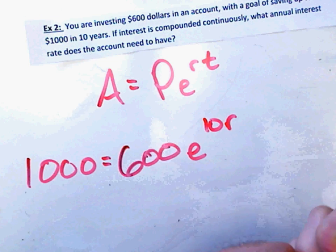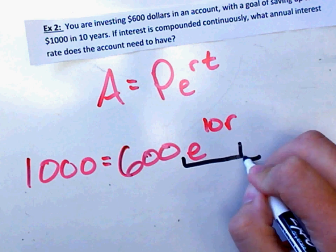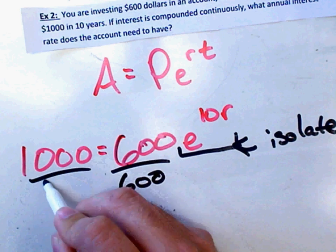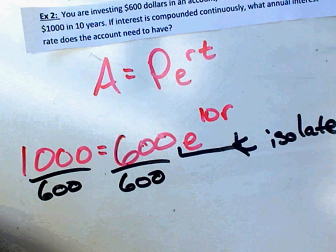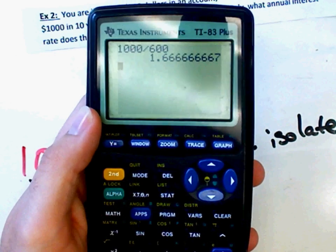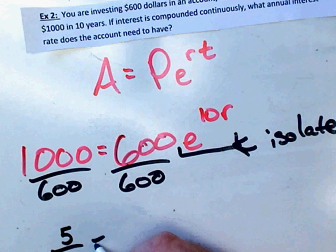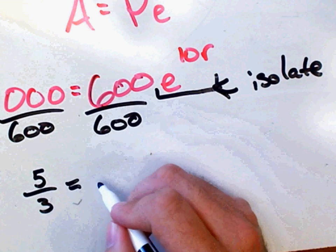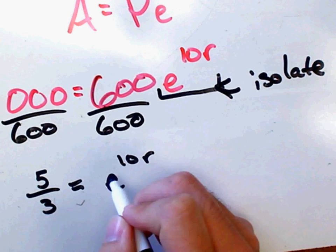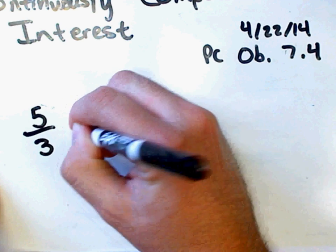Now to solve this, we need to isolate the term that has the exponent where our variable is. Which means I need to isolate this. Hopefully you see what to do first. But we're just going to need to divide both sides by the 600. So we'll say 1,000 divided by 600. You can leave it as a fraction, but I'm going to get a very simple decimal I can just plug in. That is 1.6 repeating. Or if you want to leave it as a fraction, you can say it's 5 thirds. So 5 thirds equals E to the 10R power.